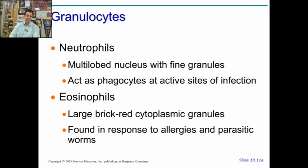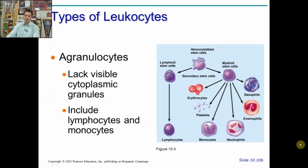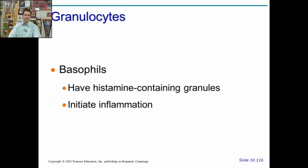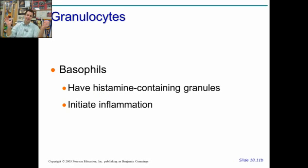Eosinophils have large brick-red cytoplasmic granules, and they work in response to allergies and also parasitic worms. Exposure to an allergen causes the release of these granules. Basophils are also tied to allergies because their granules contain histamine. When an infection comes, histamine gets released, which triggers inflammation and increased blood flow — making the area warm and enlarged to help it heal. They are the inflammation-initiation cells.